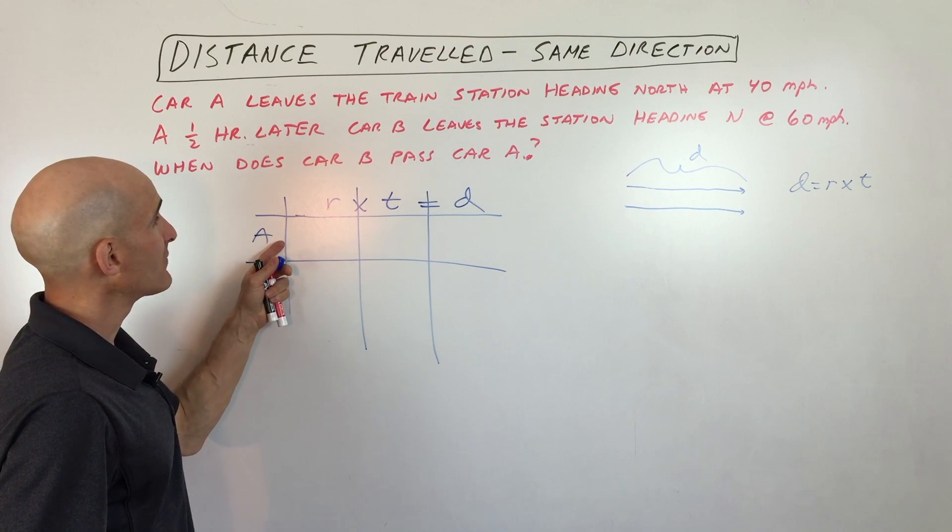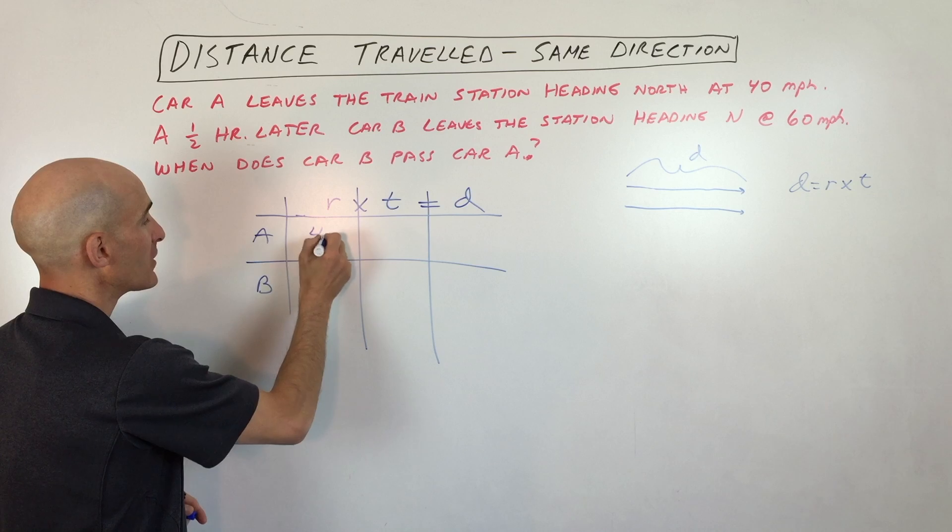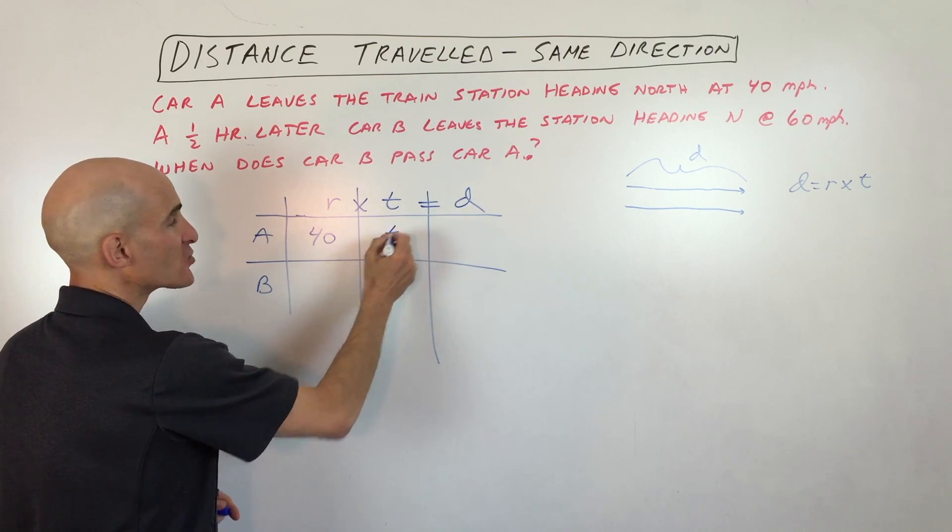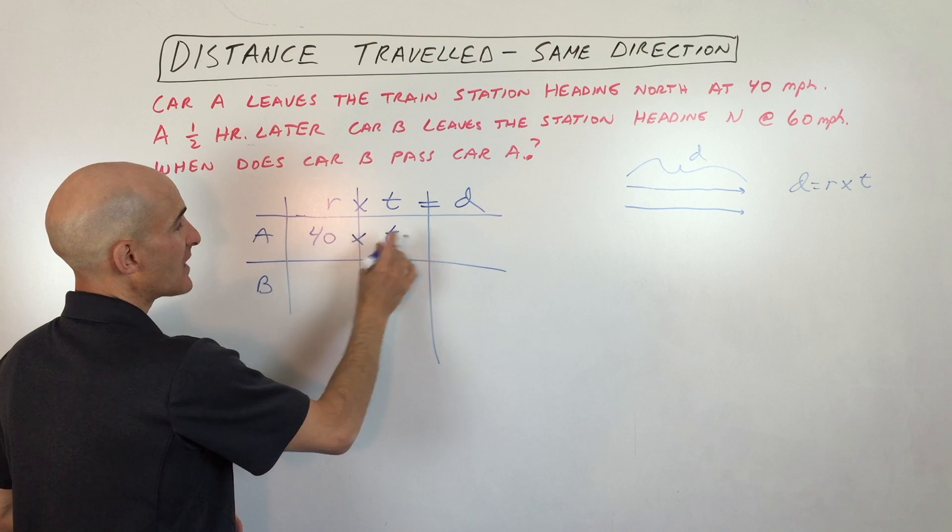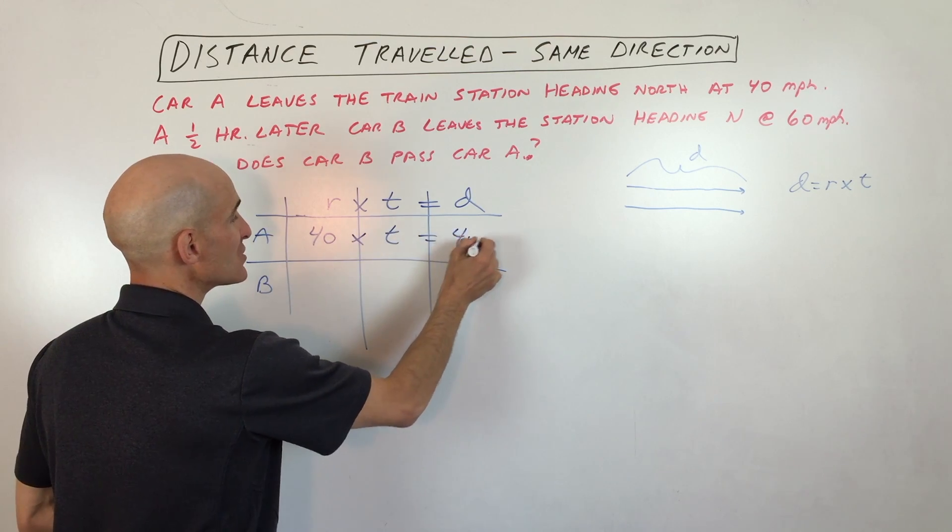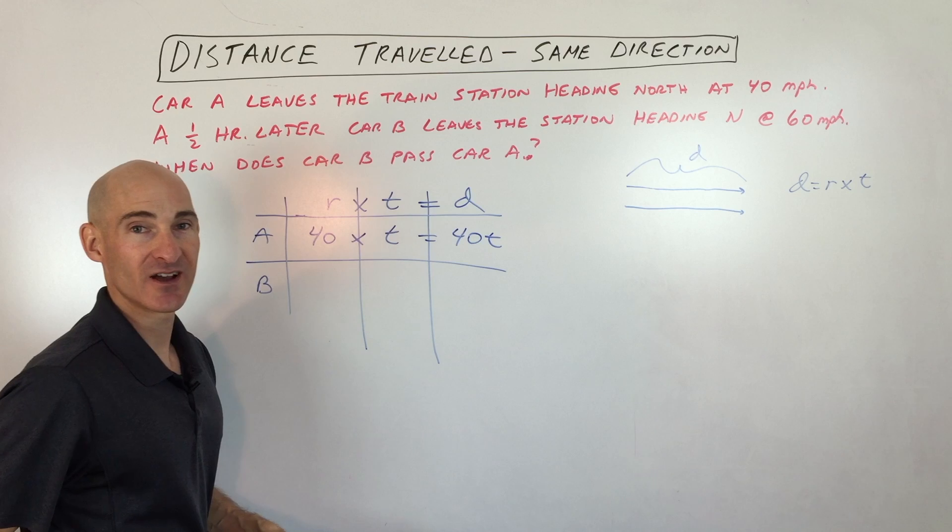So car A heads north at 40 miles per hour. So its rate is 40. And we don't know how long it's been traveling. We're just going to call that T. And when we multiply those together, 40 times T gives you the distance, which is 40T.